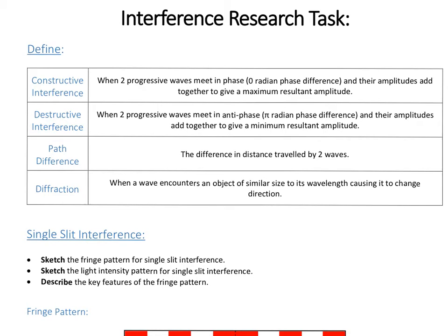All of this is based on the principles of diffraction. This is when a wave encounters something of a similar size to its wavelength, causing it to change direction and spread out in all directions. This principle allows you to hear people round corners, because sound is usually a similar wavelength to the size of rooms and corridors, allowing it to spread out in those regions.